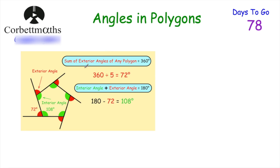Now let's look at exterior angles. For a regular pentagon, the interior angles are each 108 degrees. If you extend each side of the pentagon, you get exterior angles shown in red. Since each interior and exterior angle together form a straight line, each exterior angle is 180 − 108 = 72 degrees. Five 72s equal 360. In fact, for any polygon, the exterior angles always add together to be 360 degrees, and the interior angle and exterior angle always add together to be 180 degrees.